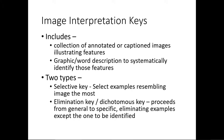There are two types of image interpretation keys: the selective key and the elimination key (or dichotomous key). In the selective key, you select examples resembling the image the most. For example, looking at an aerial photograph of Ettimane with mango orchards, you compare the feature with the key and identify that this particular part of the aerial photograph looks like the mango orchard legend.